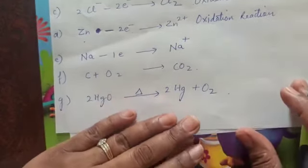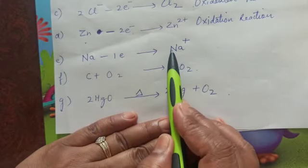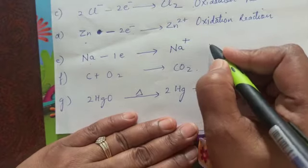Then again sodium atom, it also loses one electron to get converted to sodium ion. So this is also oxidation.